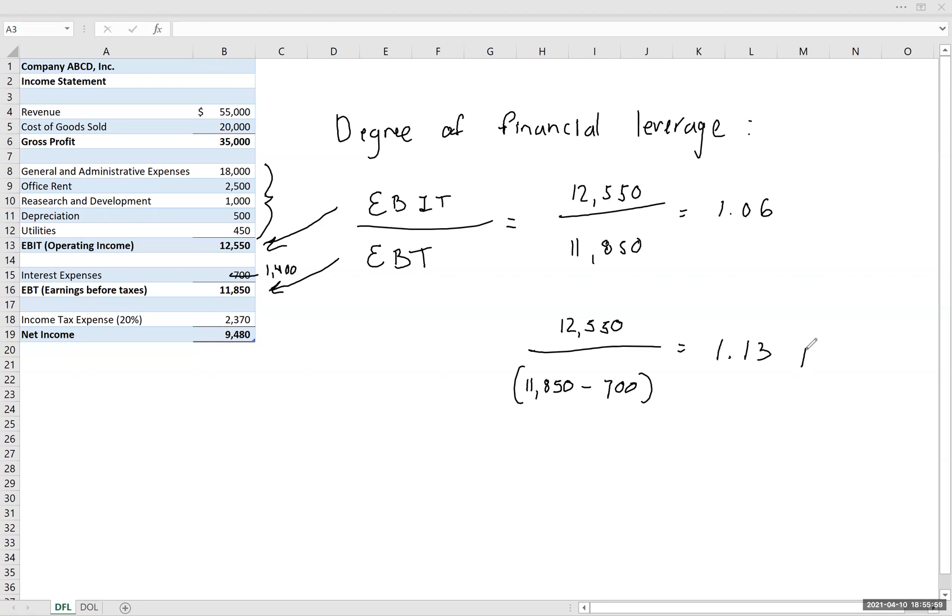So you can see we got a jump from our 1.06 that we had before. We increased our interest expense, and our degree of financial leverage increased quite a bit. We doubled our interest expense, and we went from 1.06 to, well, we really can't say that we doubled our degree of financial leverage. But this portion here that comes after the 1, we doubled that. So the point is that it increased quite a bit here.